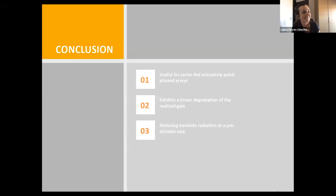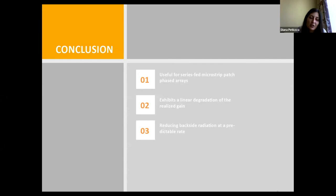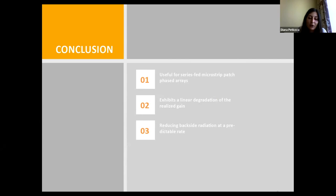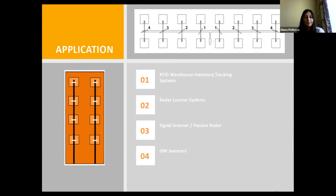Here are the conclusions from our research paper. The relationship between the rotation angle of the coupling slot and the antenna's impedance matching makes the patch element particularly useful for series-fed microstrip patch-based arrays. The proposed design exhibits linear degradation of realized gain when rotating the slot, with strong degradation from around 70 degrees. The rotation angle has a particularly useful effect of reducing backside radiation at a predictable rate. Here you can see some applications including a series-fed array and a design with two excited patches.